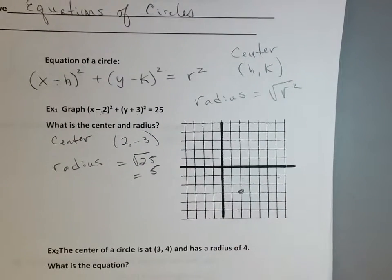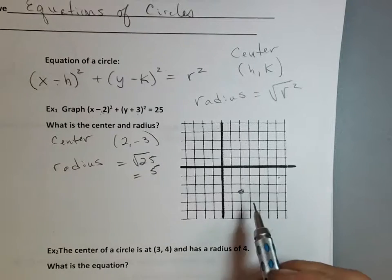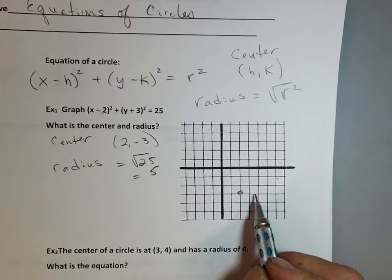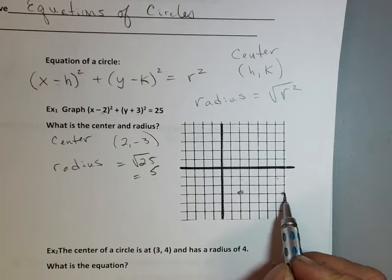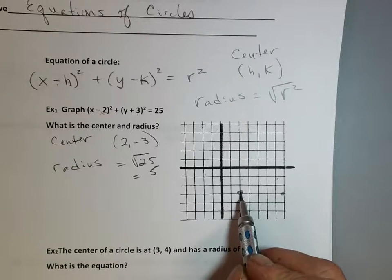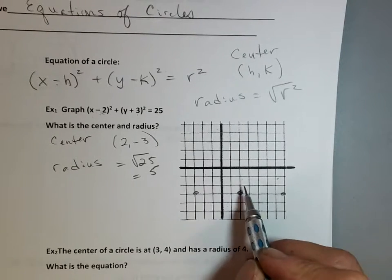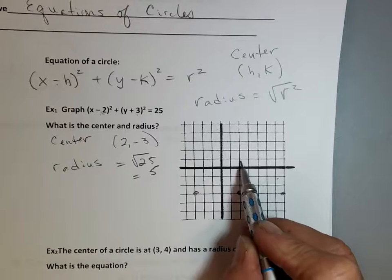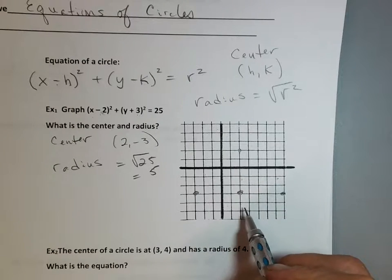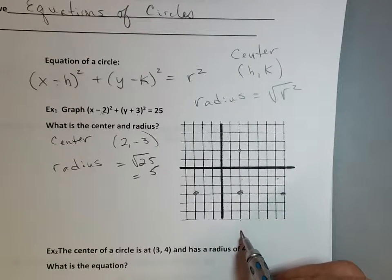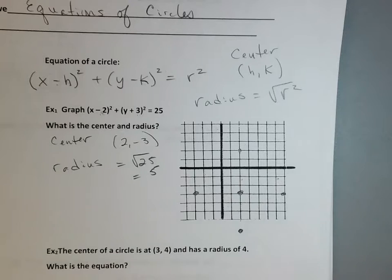I'm not much of an artist, so hopefully it will be circular. I'm going to take the center, go one, two, three, four, five forward; one, two, three, four, five back; one, two, three, four, five up; one, two, three, four, five down. So I went from the center: five, five, up five, down five.